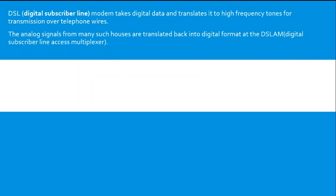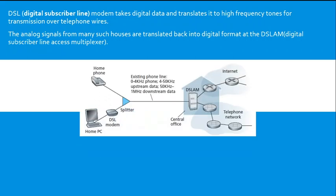DSL — Digital Subscriber Line — takes digital data and translates it to high-frequency tones for transmission over telephone wires. The analog signals from many houses are translated back to digital format in the DSLAM — Digital Subscriber Line Access Multiplexer. The splitter is the little box we use to connect the phone, the network, and the DSL modem. The existing phone line uses 0 to 4 kHz for phone, 4 to 50 kHz for upstream data, and 50 kHz to 1 MHz for downstream data.